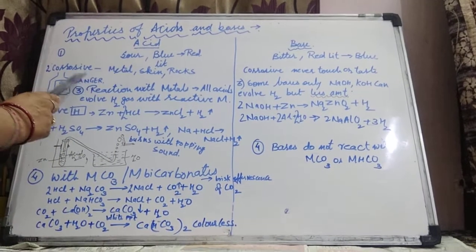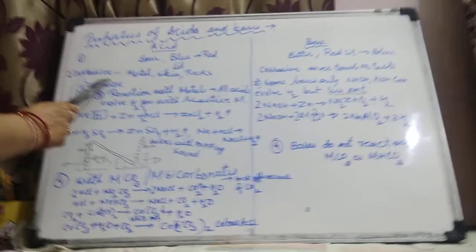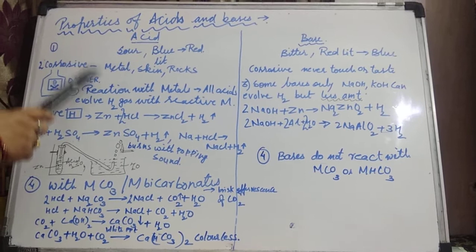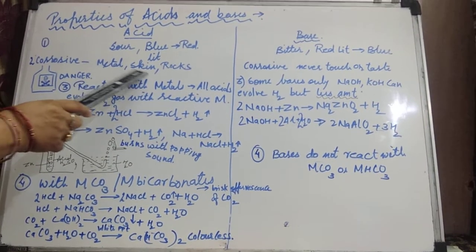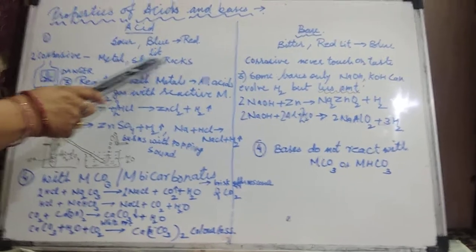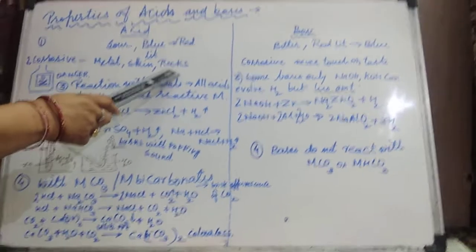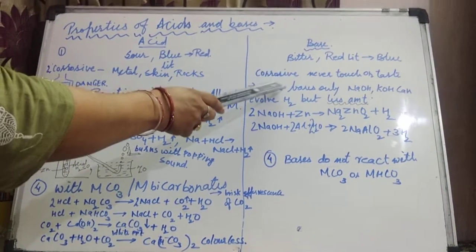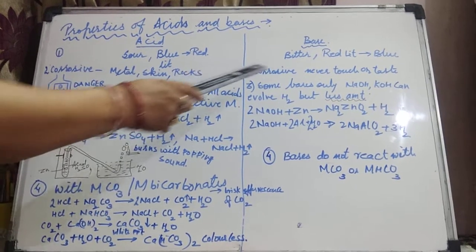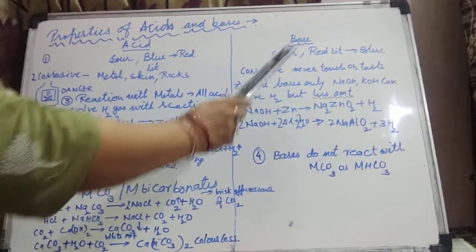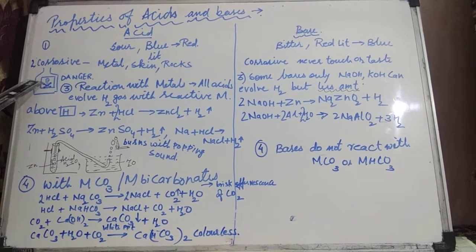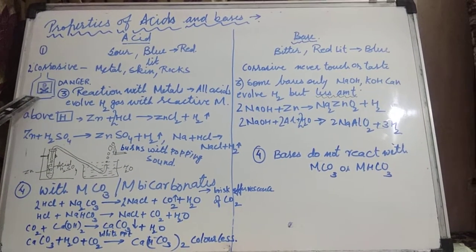Both acid and bases are corrosive in nature. Corrosive means if they are affecting the surface like metal, they produce eruptions in the skin. They cause eruptions on rocks also. And that's why it is advised never to touch or taste acid or base. On the bottles of acid, a danger sign is present.